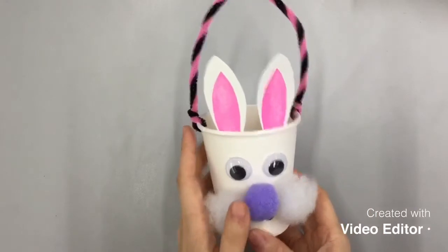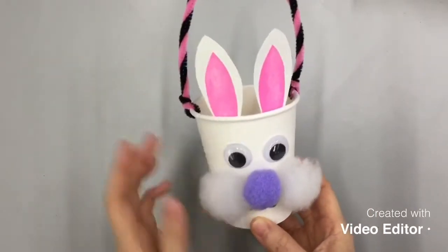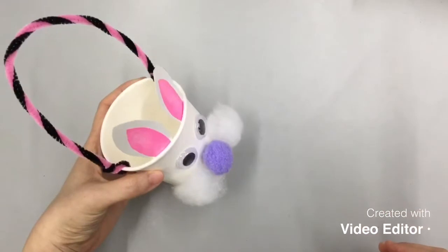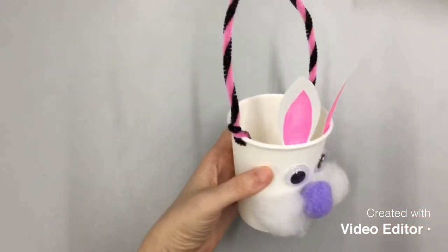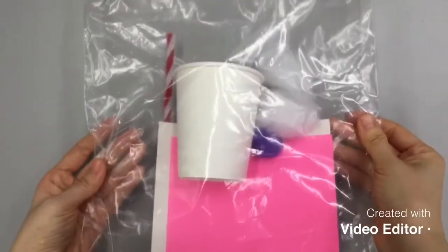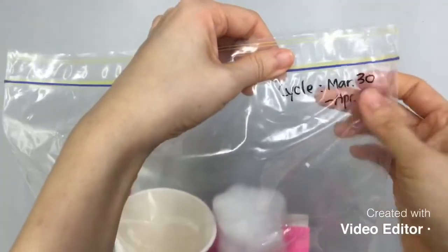Look at this. It's a bunny paper cup basket to contain the chocolate eggs. Let's check out what we can find in the bag. You will see it's marked with the dates of this cycle. There are a few items you can find in here.